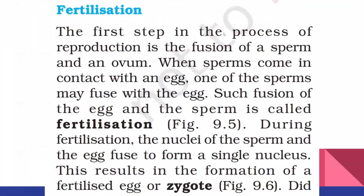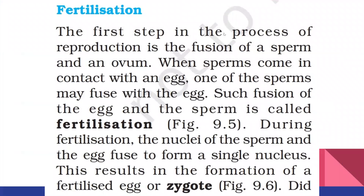The first step in the process of reproduction is the fusion of a sperm and an ovum. When sperms come out and come in contact with the egg, one of the sperms may fuse with the egg. Such a fusion of the egg and the sperm is called fertilization. During fertilization, the nuclei of the sperm and the egg fuse to form a single nucleus, resulting in the formation of a fertilized egg, or zygote.